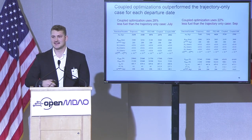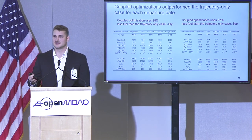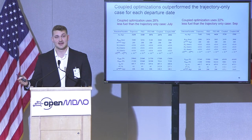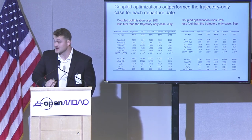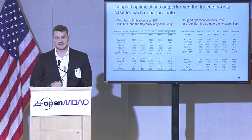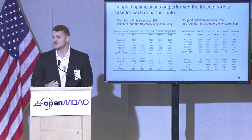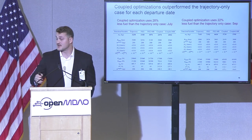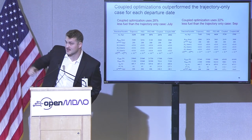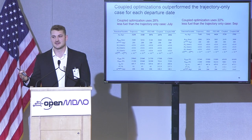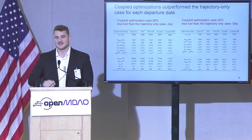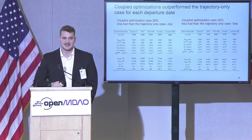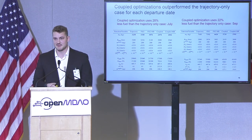Here we can see the results for the other two departure dates. The trends are the exact same. For the July case, the coupled MR is about 28% better, while for the September case it's about 22% better. The main thing to note is that for all the July fuel burns, these are actually less than the other two dates, showing that July is actually the best day to launch out of the three, while the September fuel burns are actually larger than the other two, showing that September is the worst day to launch — with May being in between the two.